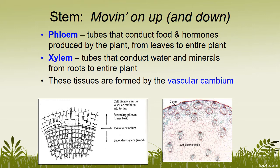Both of these are very important because obviously if you have a problem with the plant's xylem, the water can't move up through the plant and it's going to wilt. If you have a problem with the xylem in the roots, obviously the plant can't take up water. So these are a couple of different important components to understand inside of a plant.